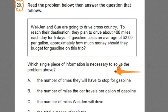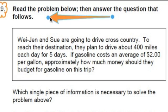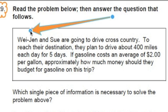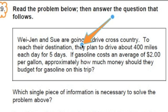So I'm going to start reading it over. And as I read it over, I want you to think about some of the math that's involved in this problem. Here we go. It says, read the problem below. And when we read it, you're going to visualize it. And then on a scrap sheet of paper, you're going to organize the information. Then answer the question that follows. Wei-Jen and Sue are going to drive across country. To reach their destination, they plan to drive about 400 miles each day for five days. If gasoline costs an average of $2 per gallon, approximately how much money should they budget for gasoline on this trip?